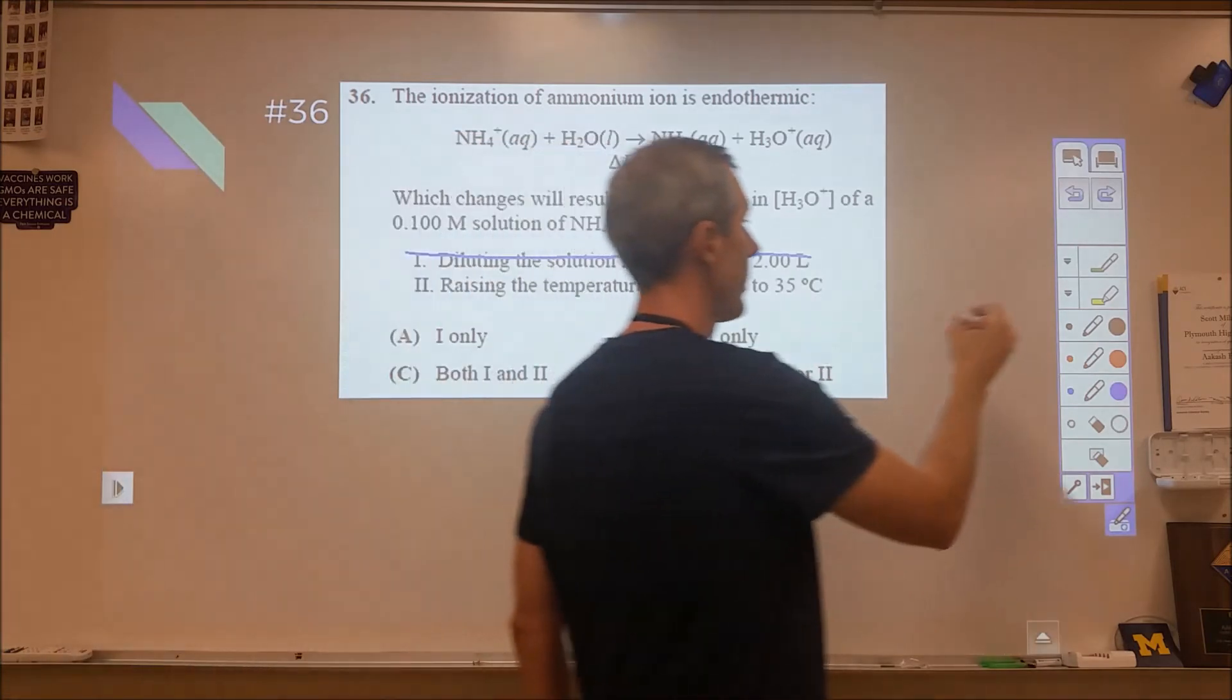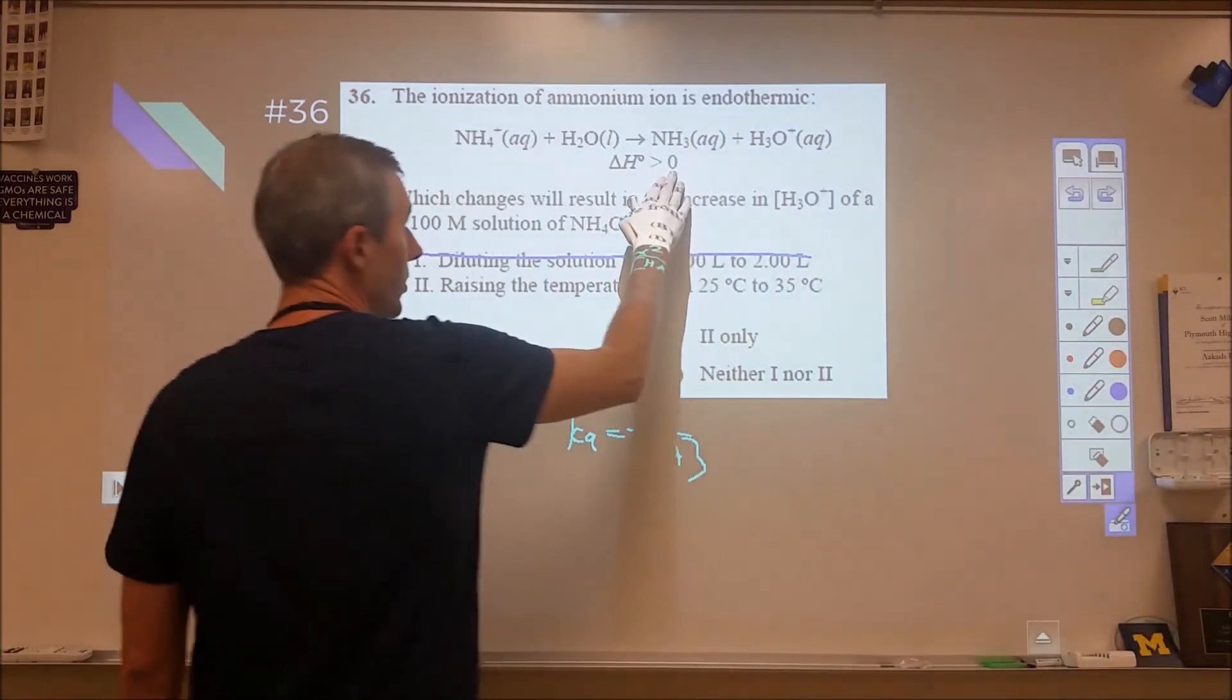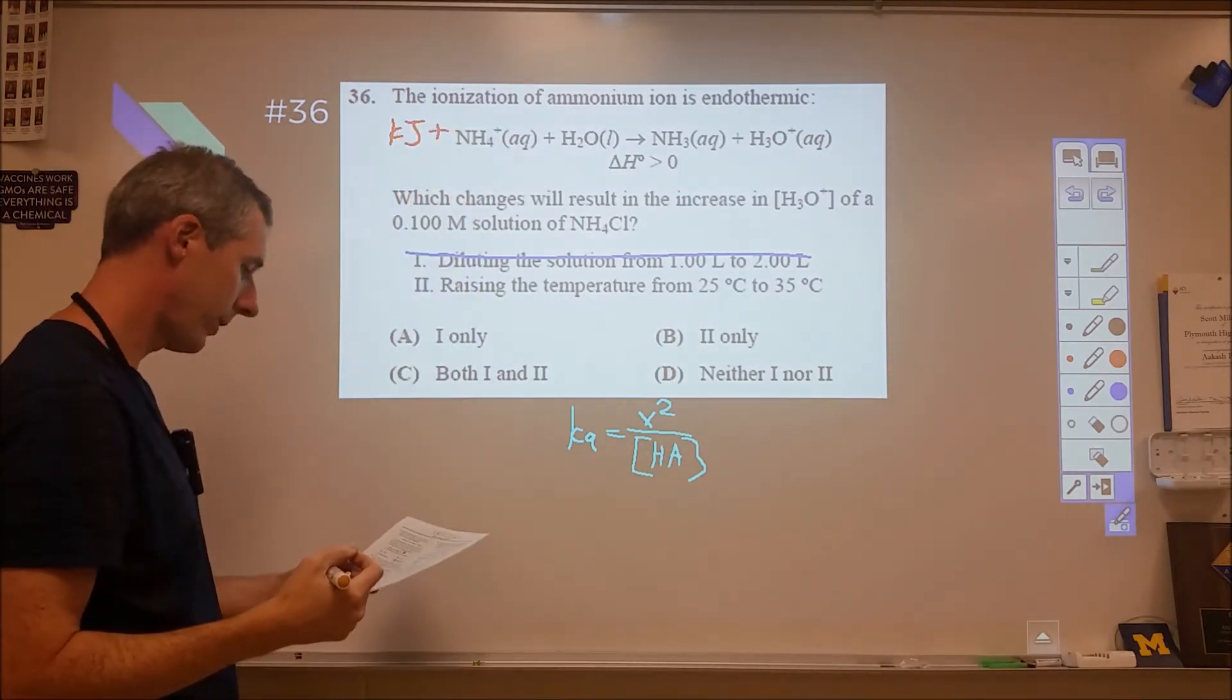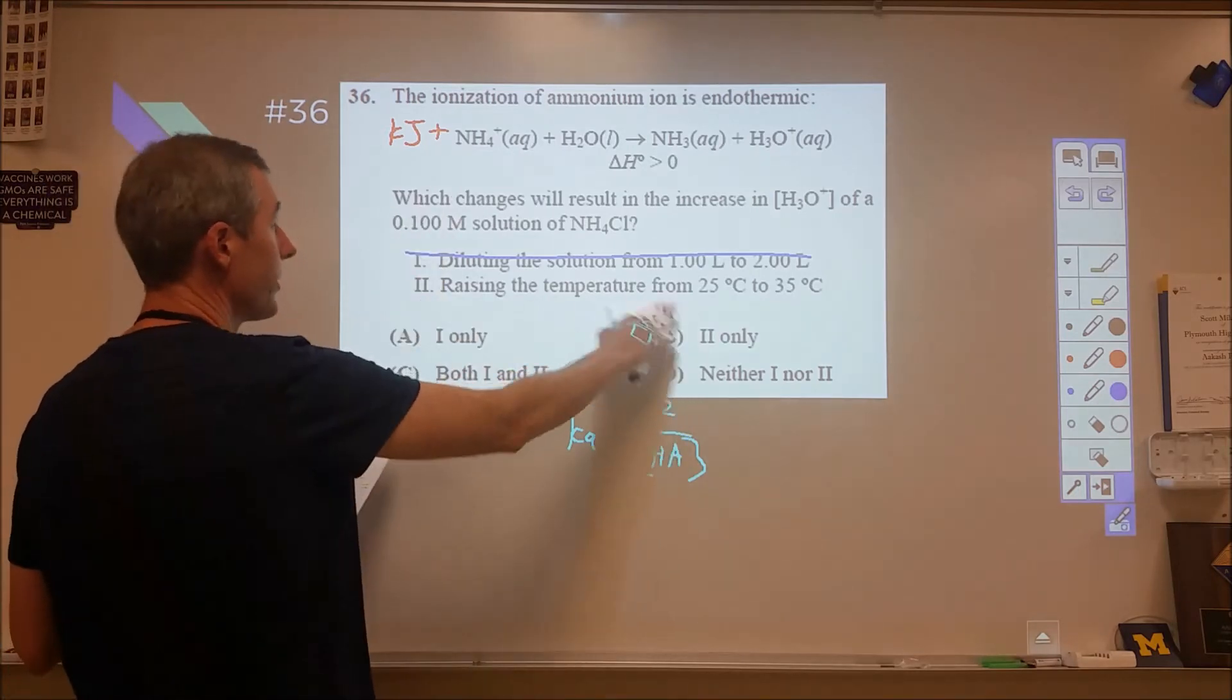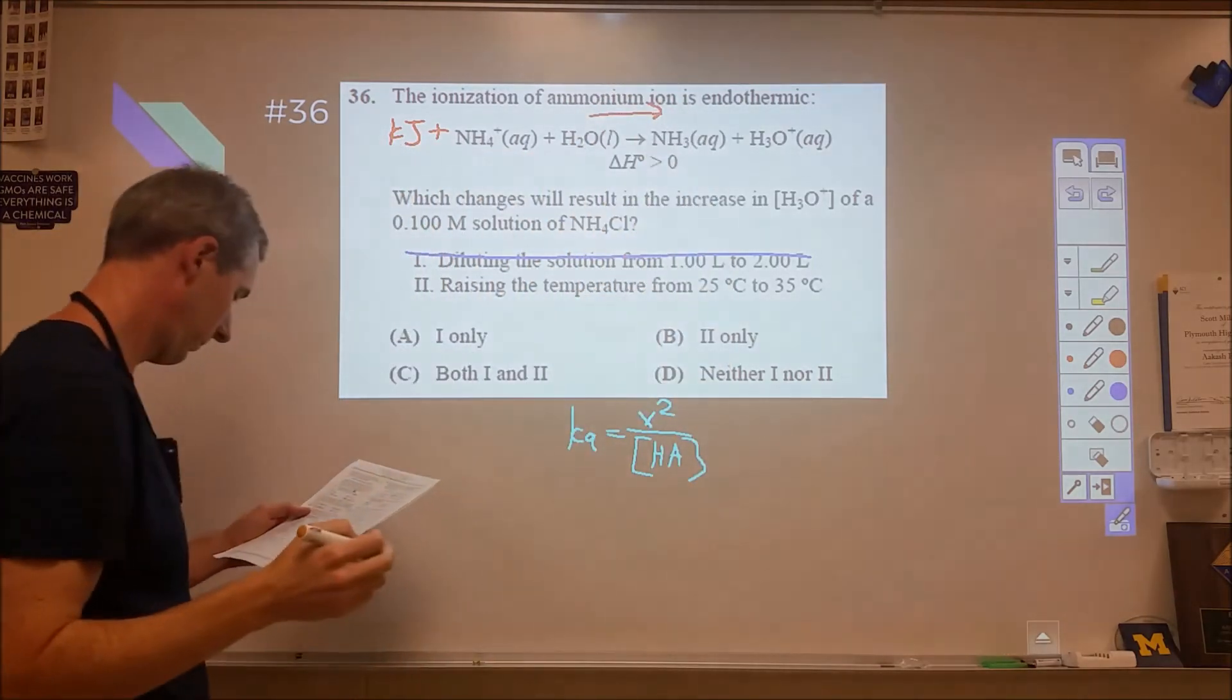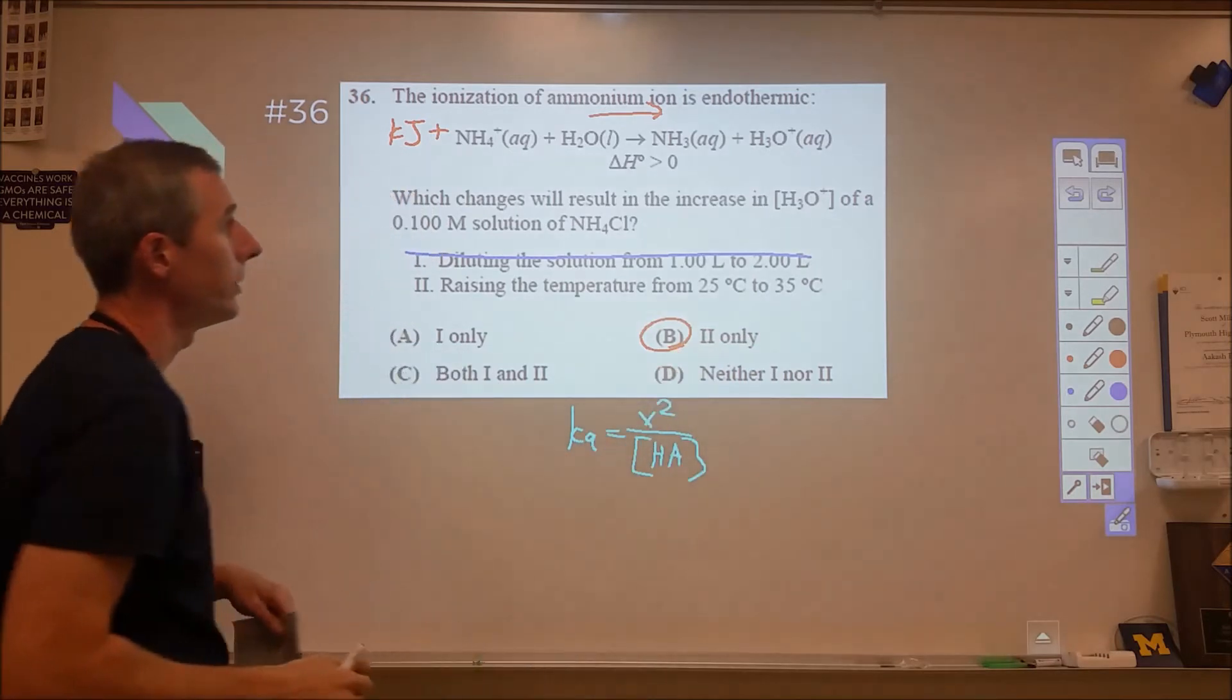And then in part 2, raising the temperature from 25 to 35, we need to look at how that shift is going to go. The way I recommend doing this, we have delta H is greater than zero. Therefore, this is an endothermic reaction. We're putting energy into it in order for this to happen. And so therefore, what's going to happen when we increase the temperature is we're increasing the amount of energy, and that's going to cause a shift to the right. And shift to the right means that our H3O plus concentration is going to go up, and therefore, B would be our correct answer.